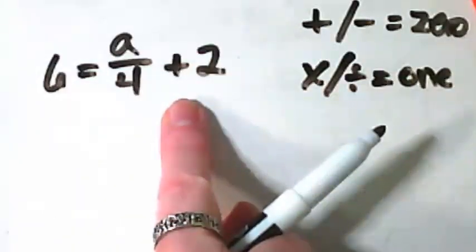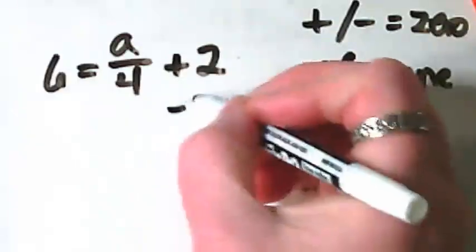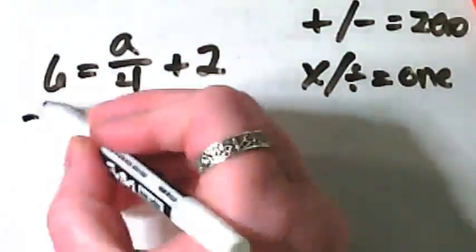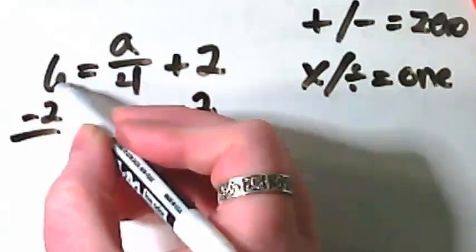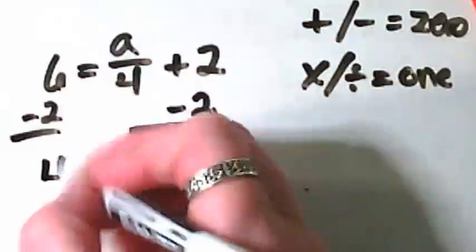How do I get a zero from this two? I want to do the opposite of adding two, and I'm going to subtract two from both sides. On the left side, six minus two is going to leave us with four.